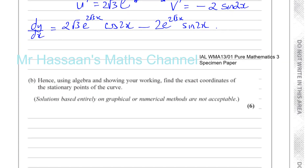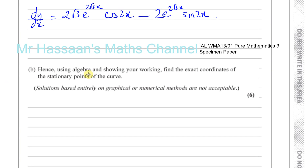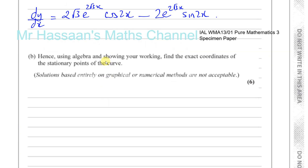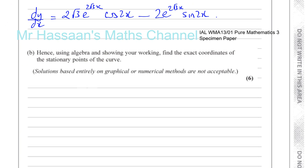That's the differential of our function. The question says: hence, using algebra and showing your working, find the exact coordinates of the stationary points of the curve. Because it says 'hence', we use what we've just found. Stationary points occur when dy/dx, the gradient, equals zero — whether they are turning points or points of inflection. So we equate our expression to zero.